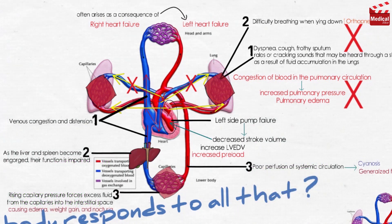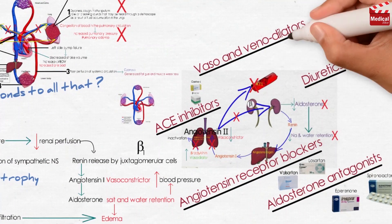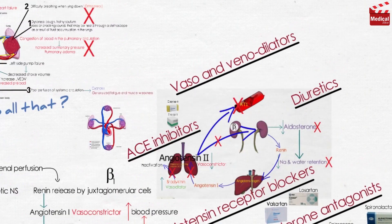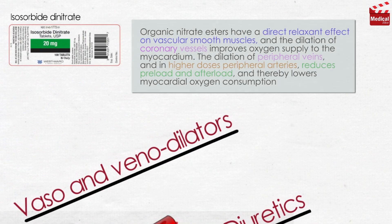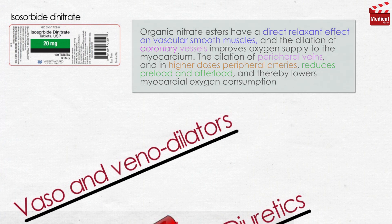Loop diuretics are the most commonly used diuretics in heart failure. Organic nitrate esters have a direct relaxant effect on vascular smooth muscle, and the dilation of coronary vessels improves oxygen supply to the myocardium. The dilation of peripheral veins, and in higher doses peripheral arteries, reduces preload and afterload and thereby lowers myocardial oxygen consumption.